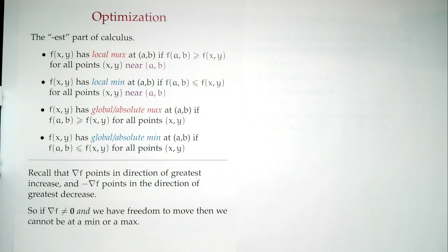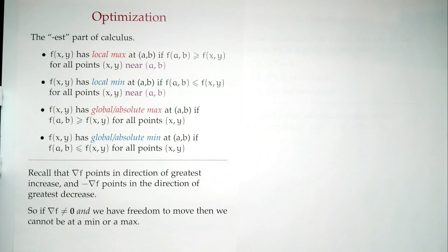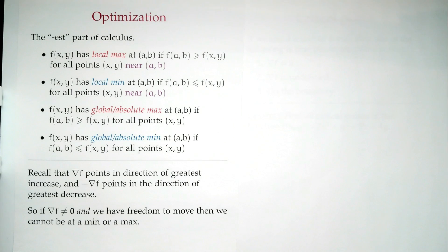The negative of the gradient points in the direction of greatest decrease. So if I'm at a point and want to go down, follow negative the gradient. From this: if I can move and the gradient is not zero, I can't be at an optimum. I can't be at a local or global max or min, because there's a way to go up and a way to go down.